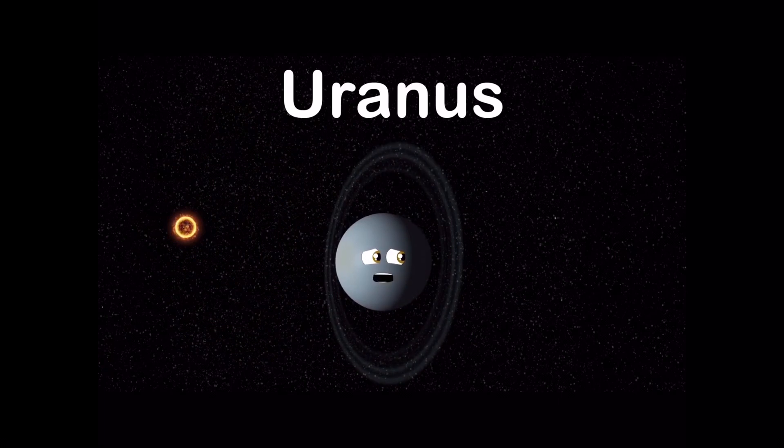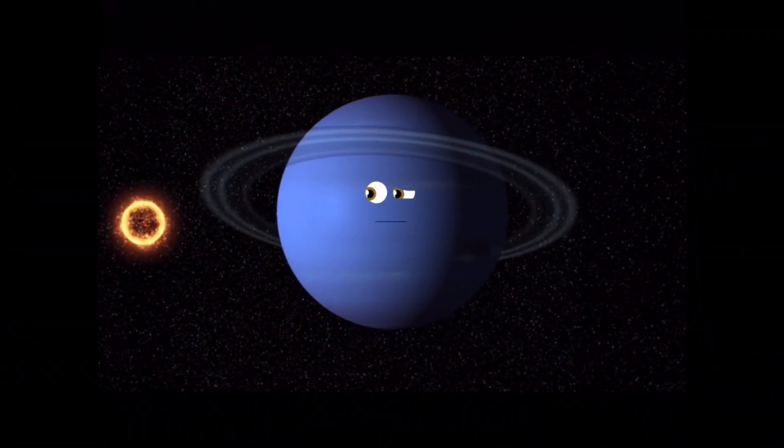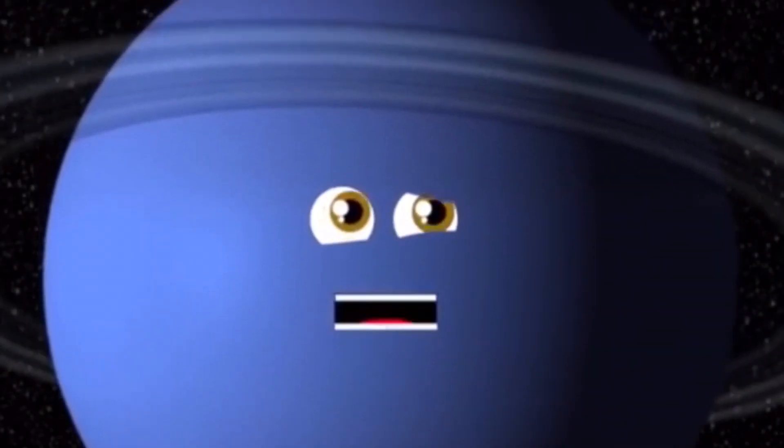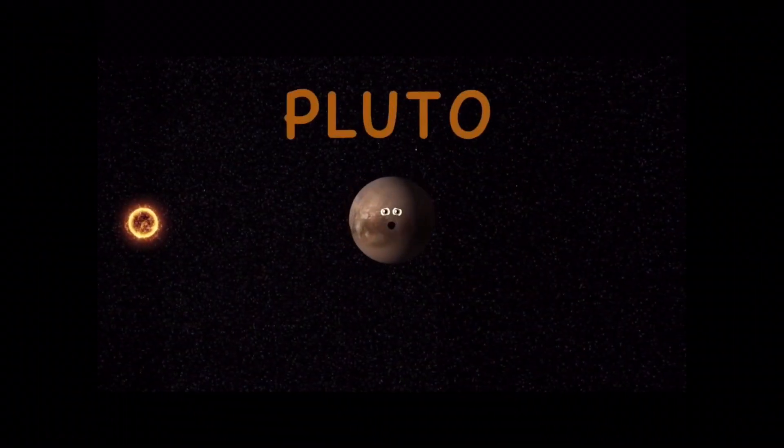Uranus is a pretty blue planet, the spin's funny. Neptune is now the last planet. Pluto used to be a planet,